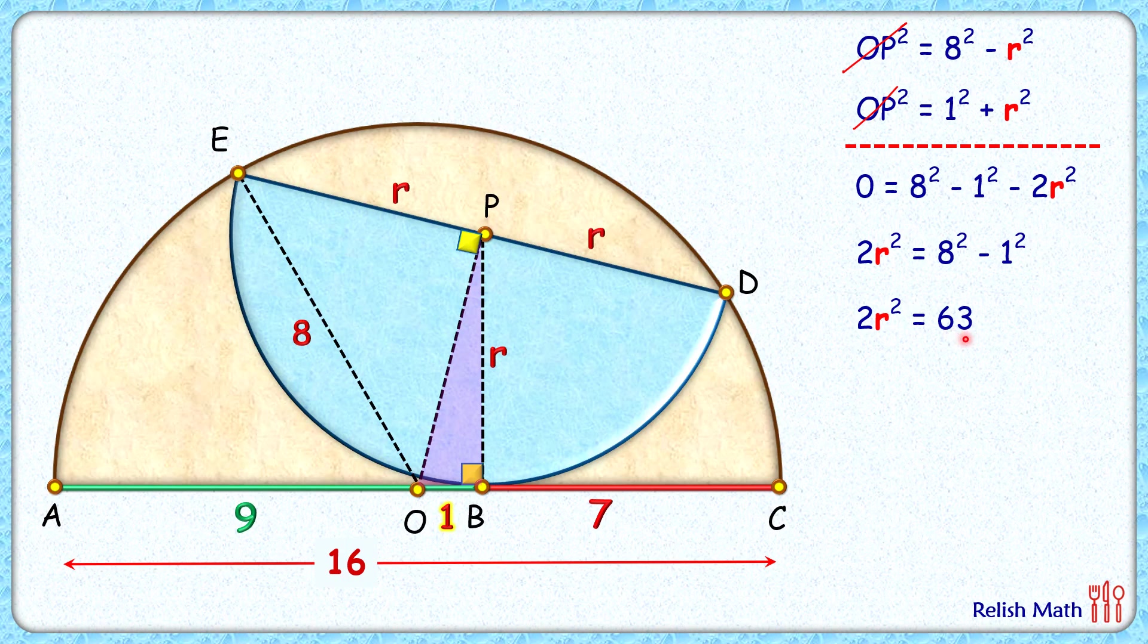And r, the radius of this blue semicircle, is the square root of 31.5, or in decimal, it's 5.61 centimeters. That's our answer.